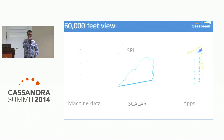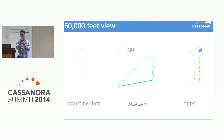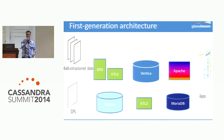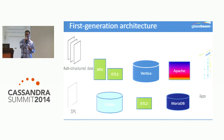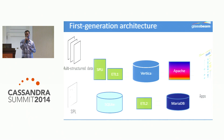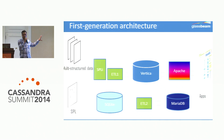This is a 60,000-foot view of our solution. Customers send us unstructured machine data, we have SPL defined for each customer, and using that SPL we extract meaning out of the data, and then we have apps on the other side that our customers use. The first-generation architecture had a parser that applied SPL rules to incoming data, extracted the data, and put it into an SQLite database. An ETL process then moved that data into a data warehousing platform — Vertica — and another ETL moved a subset into MariaDB, fronted by an Apache-based web app.